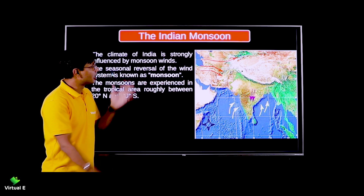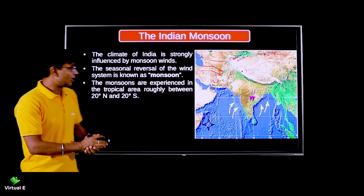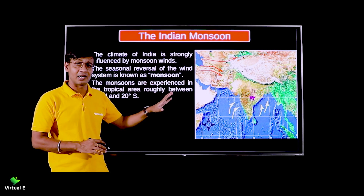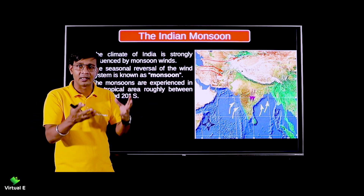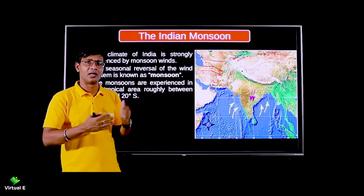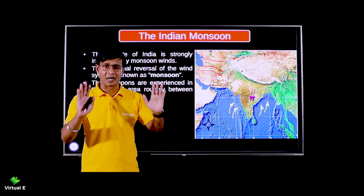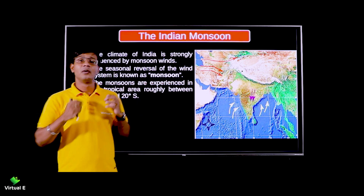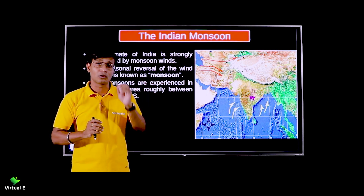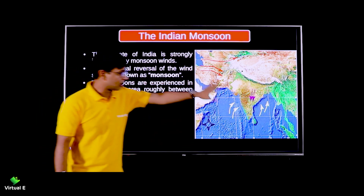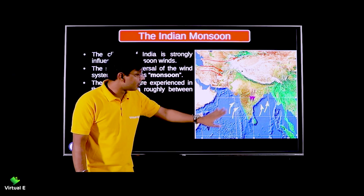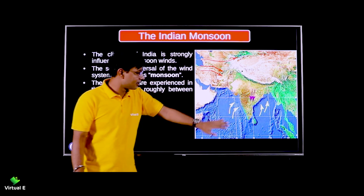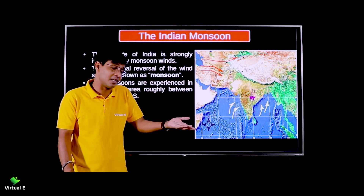Getting back to our topic - the Indian monsoon - let's understand a basic concept, then I'll take you through the slides and explain every line so you are not bogged down by the content, especially the directions of the wind. Keep this map in mind - these are the movement of the wind, this is the land mass, and this is the ocean.